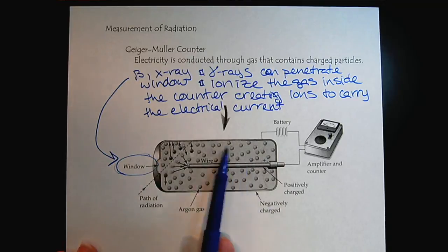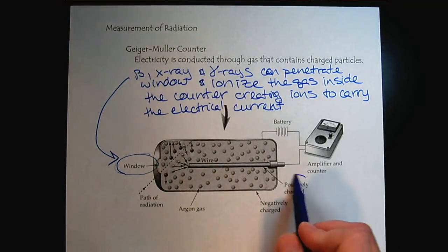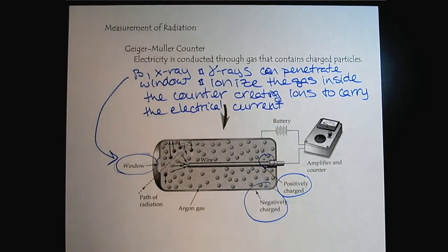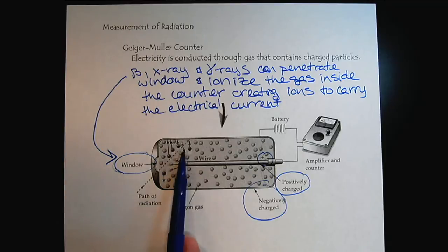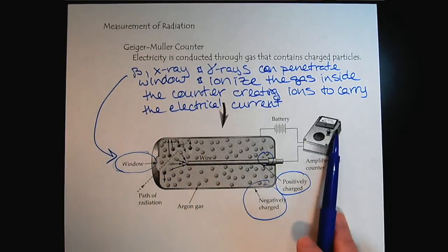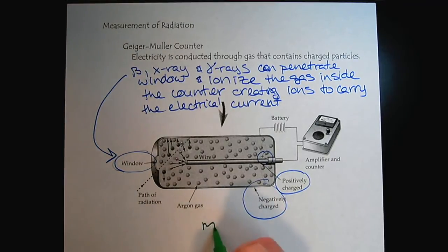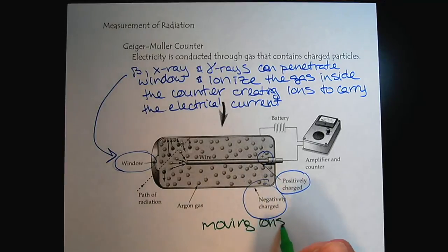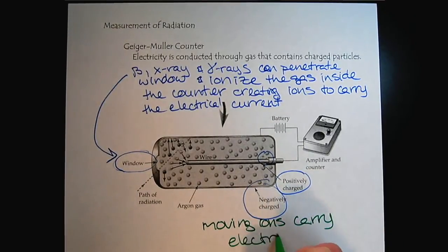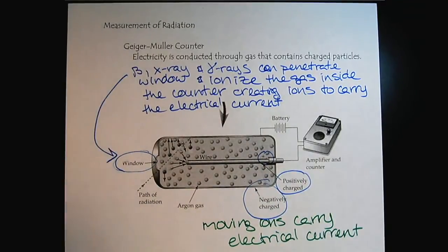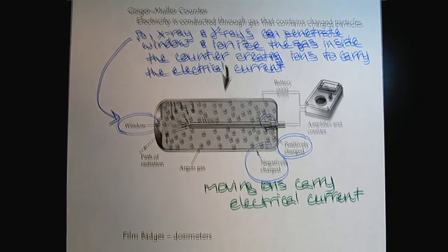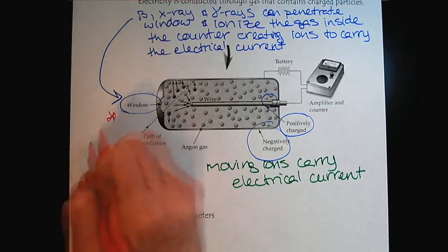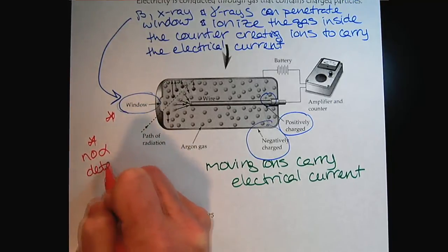So inside there's the gas and then there's the wire, and we have the positively charged and negatively charged. As the ionizing radiation comes in, it ionizes the gas molecules. Then these moving ions can carry electrical current, which creates a signal on our meter. Because remember, moving ions carry electrical current. We saw this idea when we looked at ionic and covalent compounds. When we dissolve ionic compounds in water, we call them electrolytes because they can conduct electricity. So it's the same idea. No alpha detection.